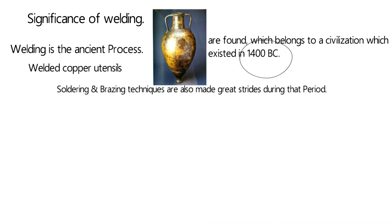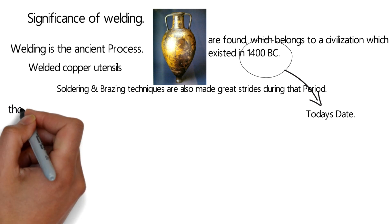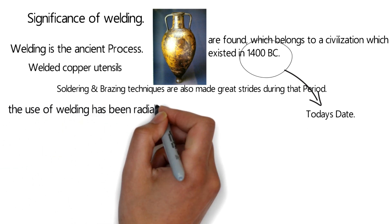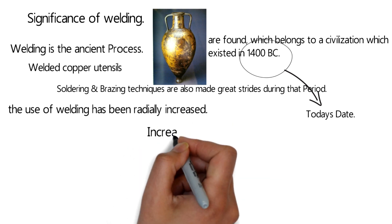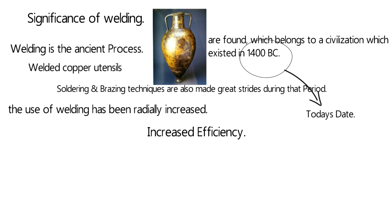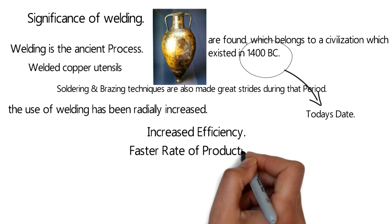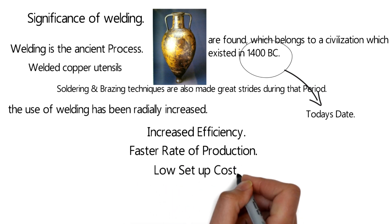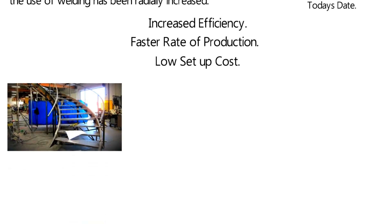From 1400 BC until the present day, a lot of welding processes have been developed, and the use of welding has steadily increased. This increase is due to improved efficiency and a faster rate of production, as well as low setup costs.